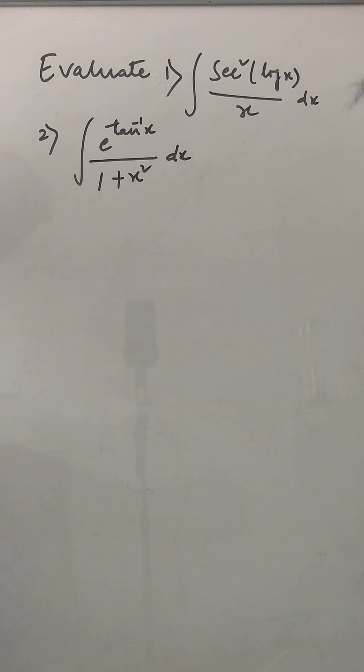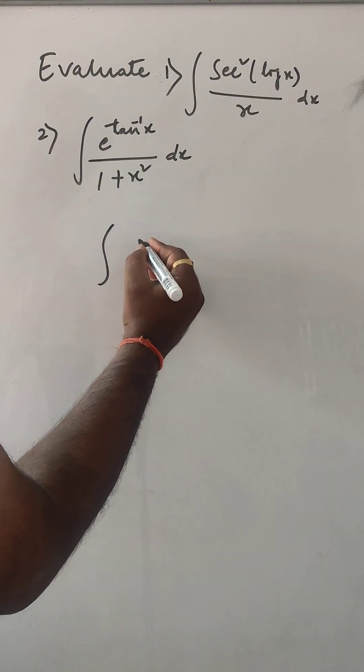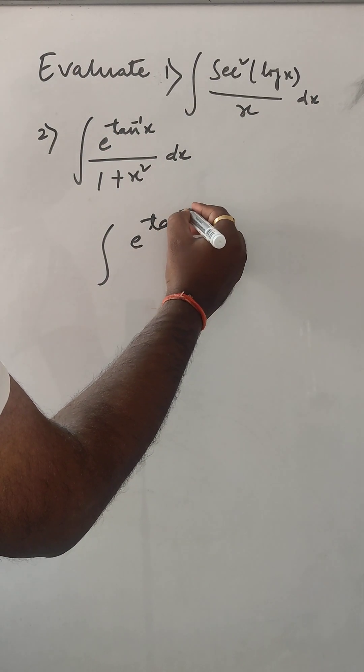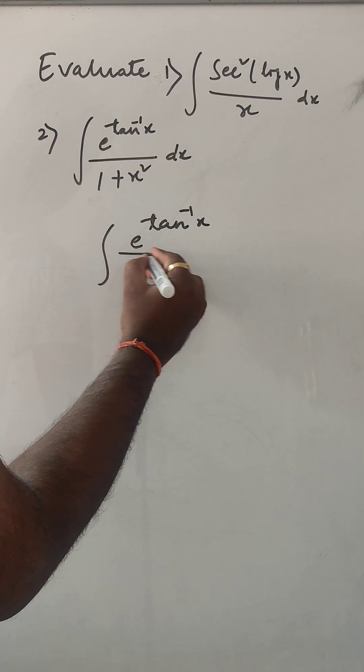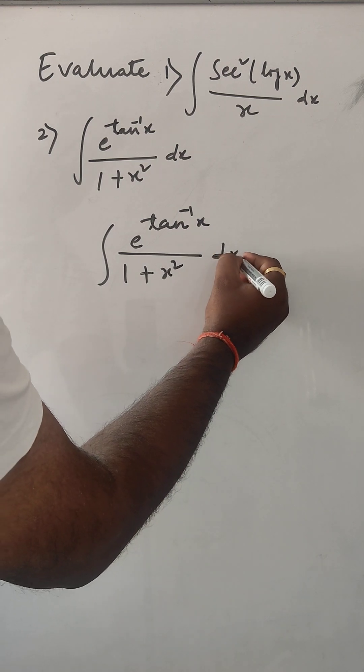So another problem. Second problem: e to the power tan inverse x by 1 plus x square dx.